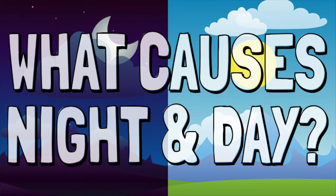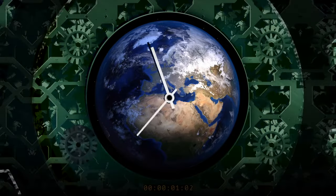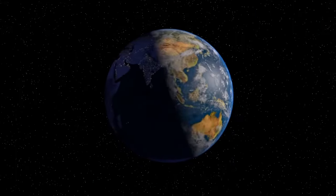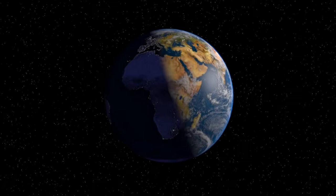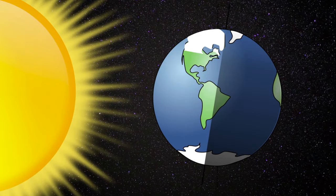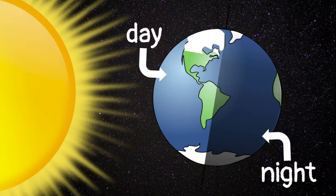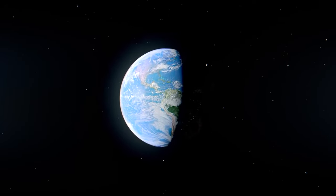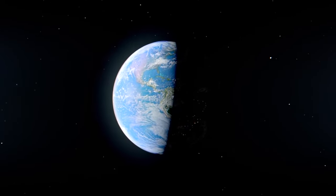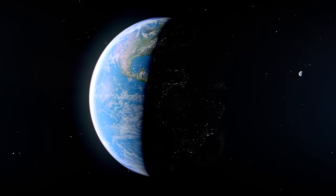But what causes day and night? One day is 24 hours long. That is how long it takes the Earth to rotate or spin around one time. Half of the Earth faces the sun and the other half faces away. The part of the Earth facing the sun has daytime, and the part facing away has night. As the Earth spins, the part of the planet facing the sun changes. When it's day on one half of Earth, it's night on the other.